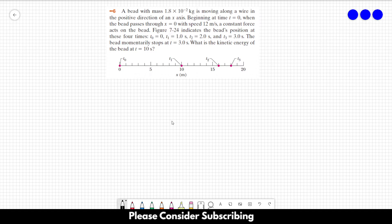a constant force acts on the bead. This figure indicates the bead's position at these 4 times: t equals 0, 1, 2, and 3 seconds. The bead momentarily stops at t equals 3 seconds. What is the kinetic energy of the bead at t equals 10 seconds?